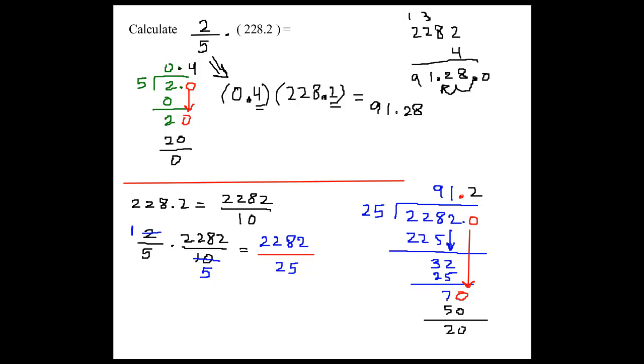And the remainder is 20. And if I continue with bringing more 0s down here, then I would get 8. 8 times 25, that gives me 200. And the remainder obviously is equal to 0.